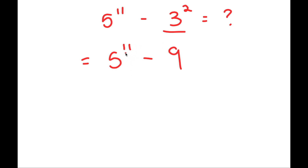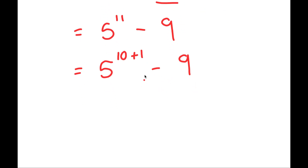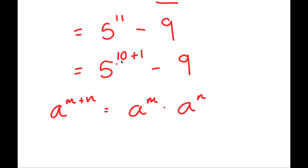From here, I'm going to write 5 to the power of 11 as 5 to the power of 10 plus 1. This way, I can use the property a to the power of m plus n equals a to the power of m times a to the power of n. So this turns into 5 to the power of 10 times 5 to the power of 1, minus 9.